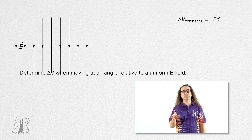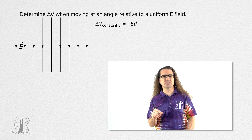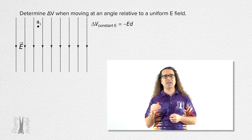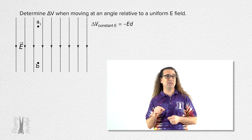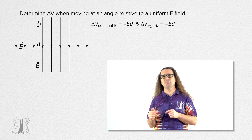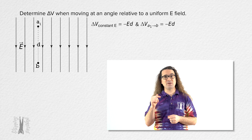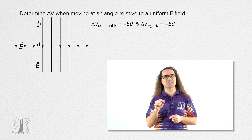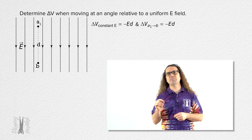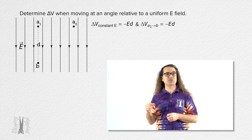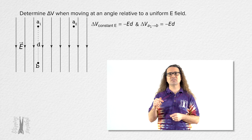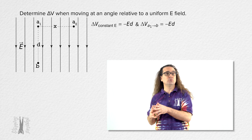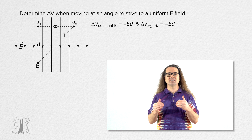Let's remove the charged plates from our illustration and retain the uniform electric field. Let's define points a1 and b such that we have the same electric potential difference from point a1 to point b as we did before: negative electric field times distance d. Let's define point a2 such that it is at a horizontal distance x from point a1, and let's label the distance from point a2 to b as h.